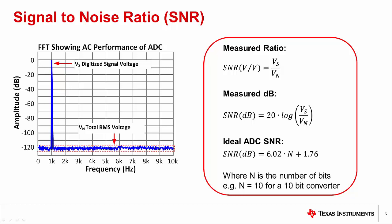This is the relationship for an ideal converter, where the only error source considered is quantization noise. No practical data converter will have a better signal-to-noise ratio than what is given by this equation, as practical converters have other noise sources.